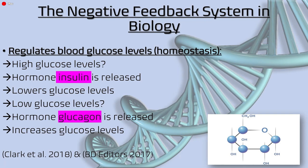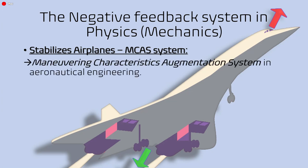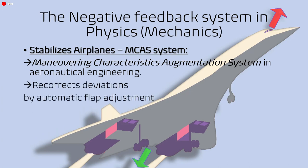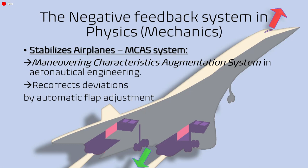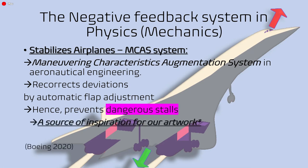As for the negative feedback system in physics, more specifically aeronautical engineering and mechanics, it is used to stabilize airplanes via the MCAS system — the Maneuvering Characteristics Augmentation System. How this system works is that it re-corrects deviations in the airplane by automatic flap adjustment. For example, if the plane is diving too fast, the flap re-corrects itself such that the plane maintains a stable trajectory. This is used to prevent dangerous and sometimes fatal stalls where the plane would not be recoverable.